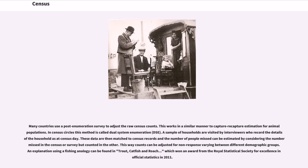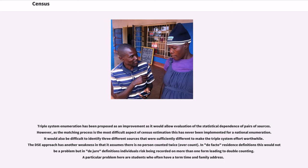An explanation using a fishing analogy can be found in 'Trout, Catfish, and Roach,' which won an award from the Royal Statistical Society for Excellence in Official Statistics in 2011. Triple system enumeration has been proposed as an improvement as it would allow evaluation of the statistical dependence of pairs of sources. However, as the matching process is the most difficult aspect of census estimation, this has never been implemented for a national enumeration.